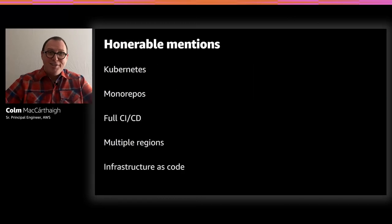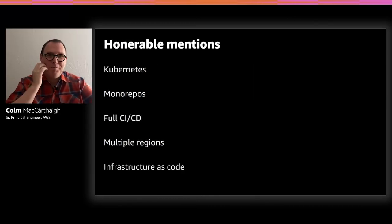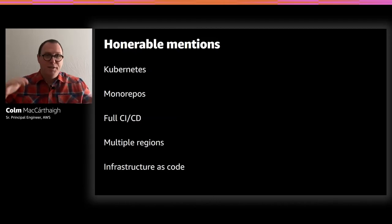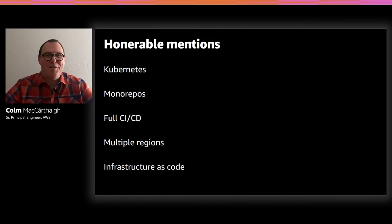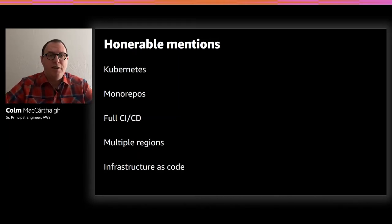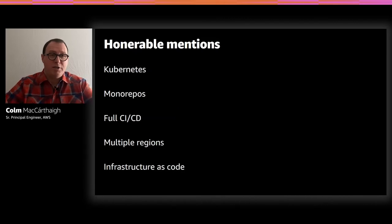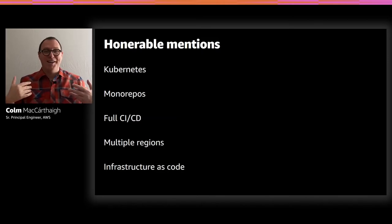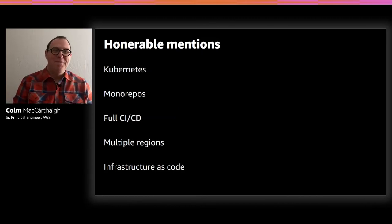I also have some honorable mentions that bubbled up in the responses. Kubernetes was another popular one. Many customers felt that just because big providers use a lot of Kubernetes, container orchestration, sidecars, and service meshes doesn't mean it makes sense for them — especially smaller and medium-sized customers. Estimates suggest a real Kubernetes deployment requires literally millions of dollars of investment to justify, expecting significant returns in organizational agility. Monorepos — keeping all source code in one big repository — also came up; we don't do that at AWS.